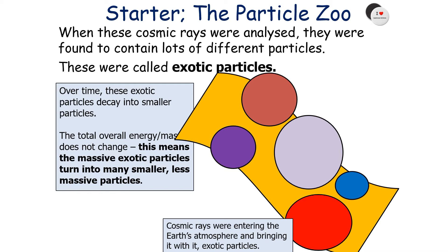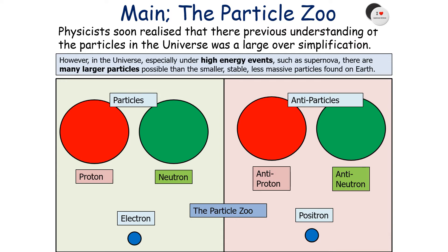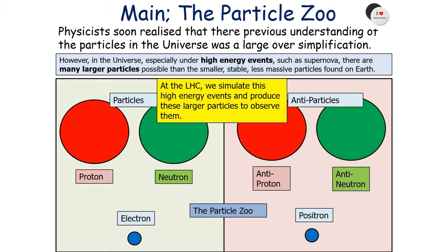The massive exotic particles turn into many smaller, less massive particles. The particles already known — the common particles on Earth — are common because they're the smallest stable possible particles to be made in the universe. Physicists soon realised that the previous understanding was a large oversimplification. In the universe, especially under high energy events such as supernovae, there are many larger particles possible. At the Large Hadron Collider, we simulate these high energy events to produce and observe these larger particles.